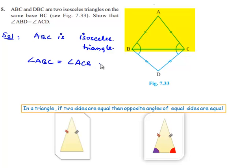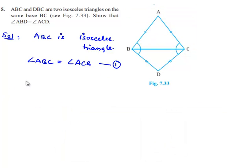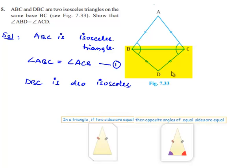Now let us note it down as equation number one. Here, it is also given that DBC is also an isosceles triangle. Therefore, by applying the same concept that angles opposite to equal sides are equal, angle DBC is equal to angle DCB. Let us note it down as the second equation.